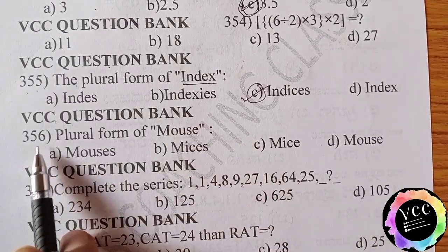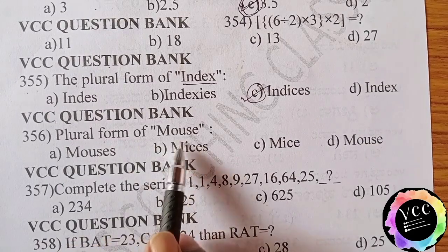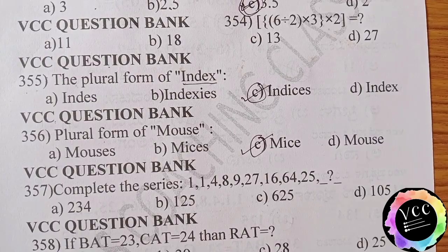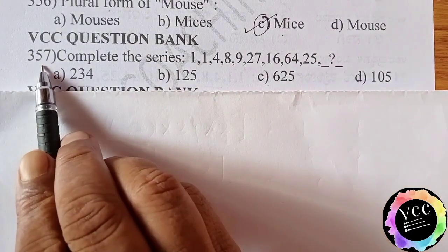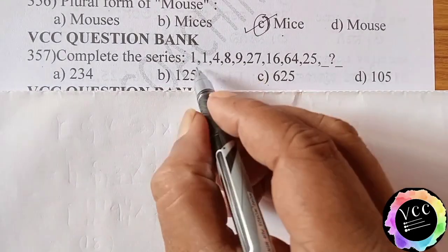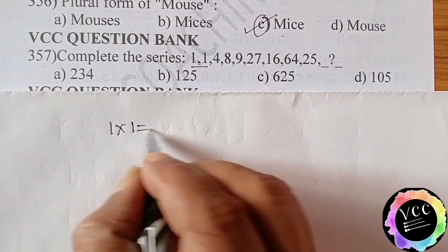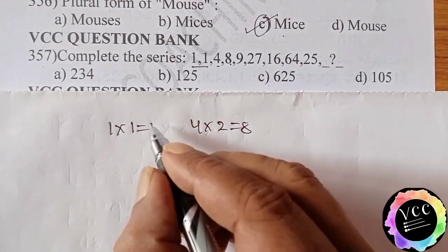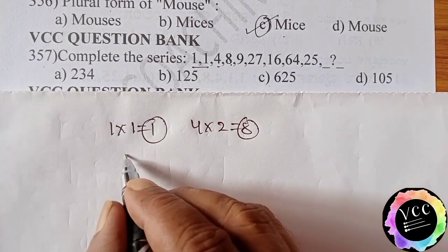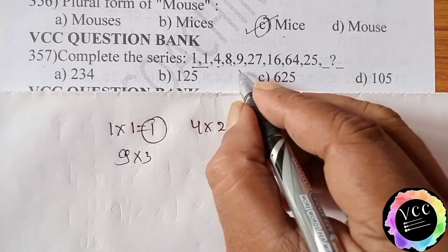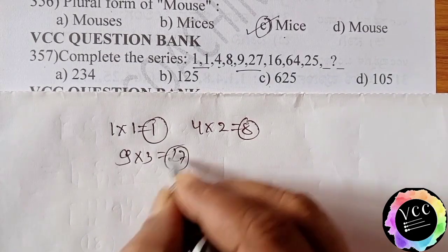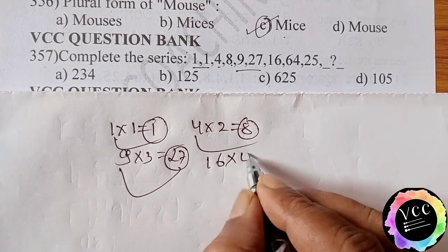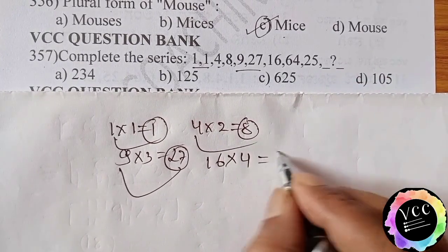VCC question bank 357. Complete the series. Here 1 times 1 equals 1, so 4 times 2 equals 8. So here 1 came, here 8 came. So in the same fashion, 9 times 3, 27. 27 will come. 9 and 27. 1 and 1, 4 and 8. In the same fashion, here 16 into 4 equal to 64.